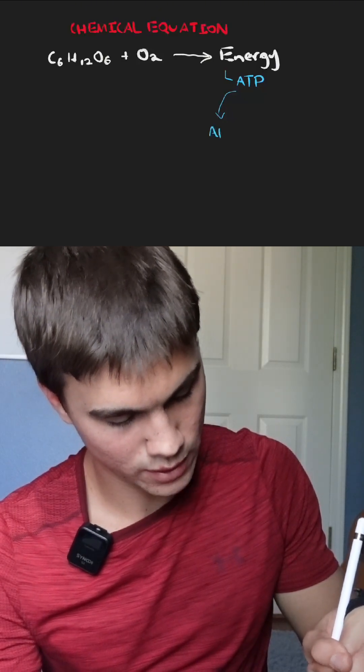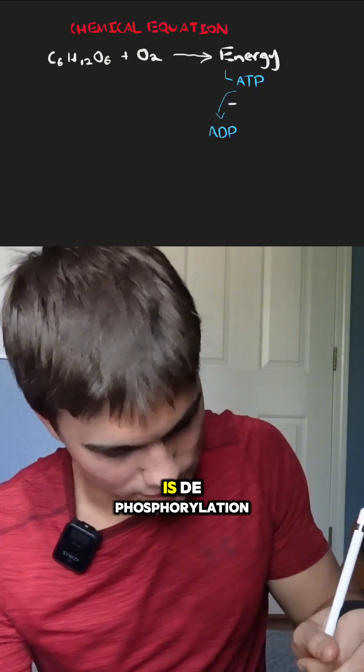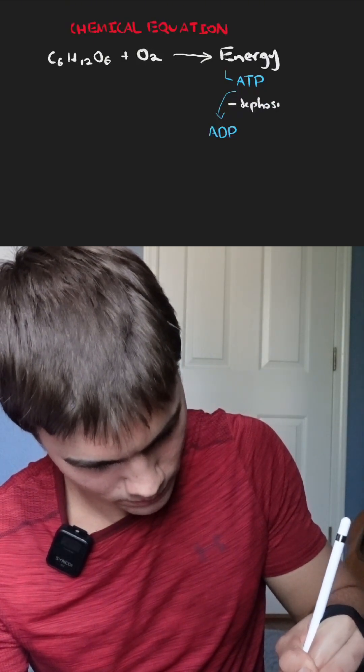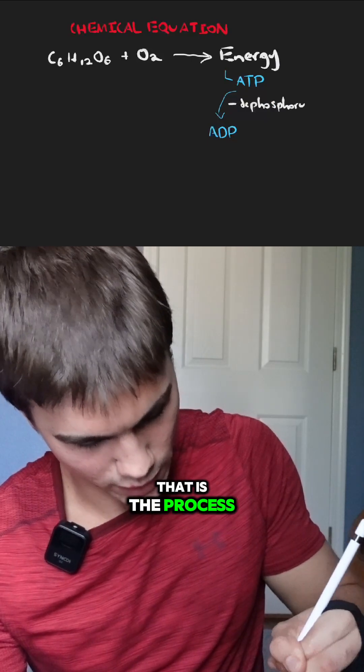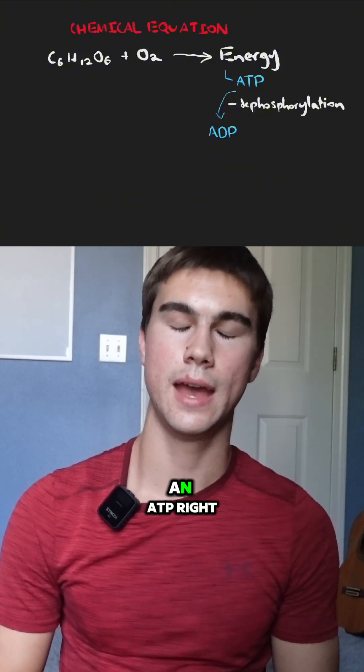into adenosine diphosphate is dephosphorylation. That is the process of removing a phosphate group from an ATP.